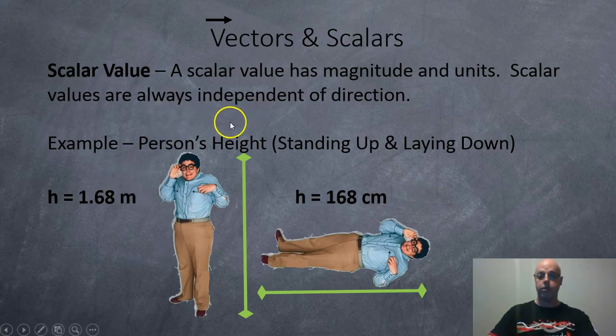So for example, a person's height standing up and laying down is the same height, doesn't matter what direction you are facing. So this person here has a height of 1.68 meters standing up, 168 centimeters laying down, same value either way.